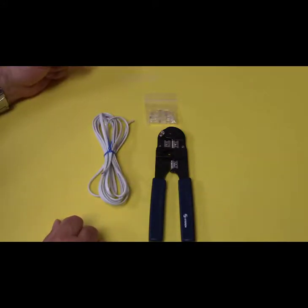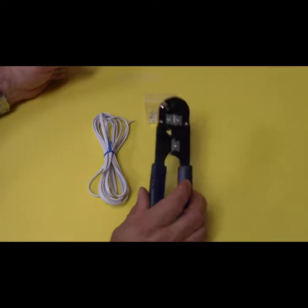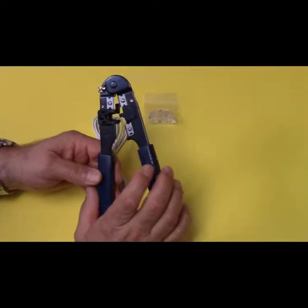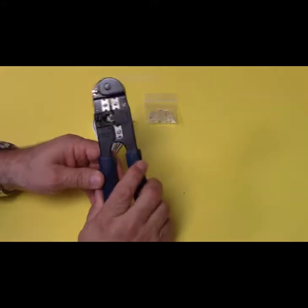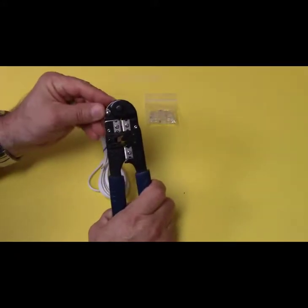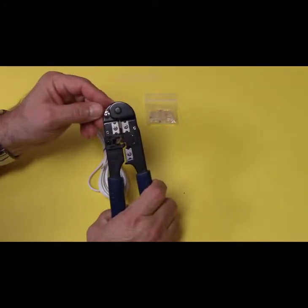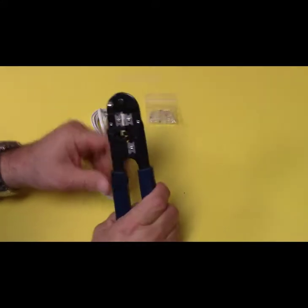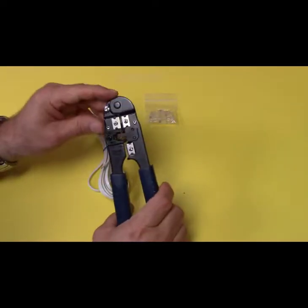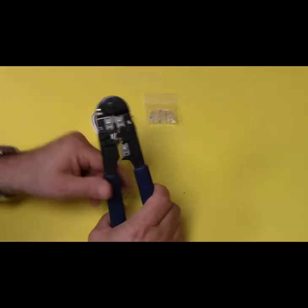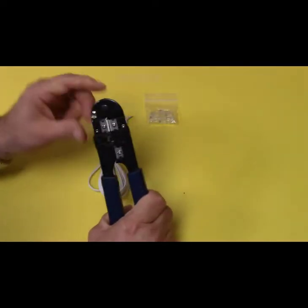So in your student activity kit you should have your combination crimper, stripper, cutter. And if you look, it's got a little flip thing here that's a lock, so it won't open. I like to keep it in the closed position so I don't end up hurting myself. When I use it, I just flip this back and then I can open the jaws all the way.